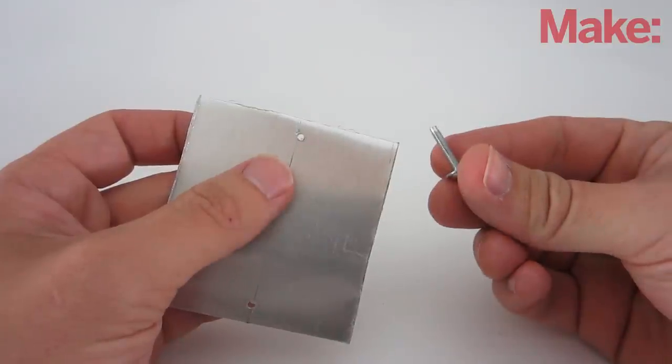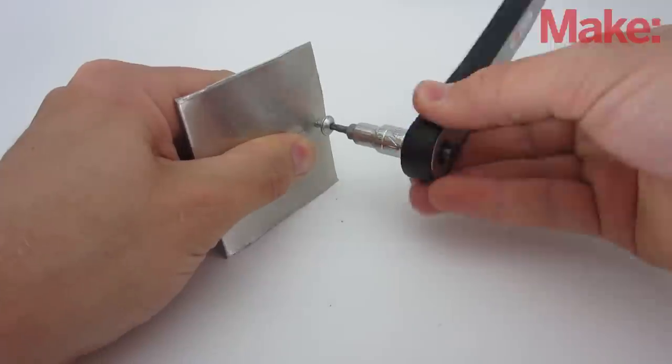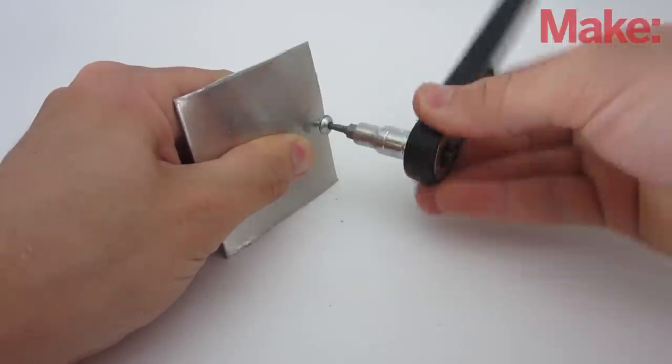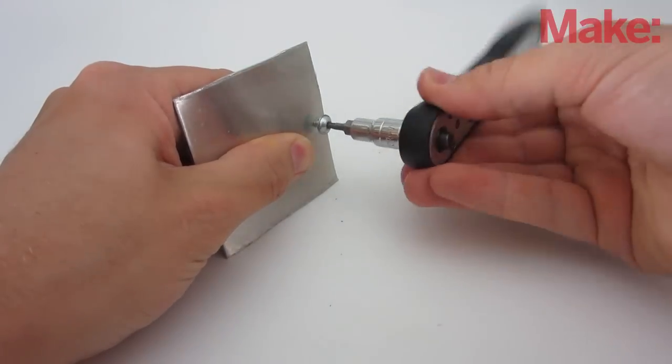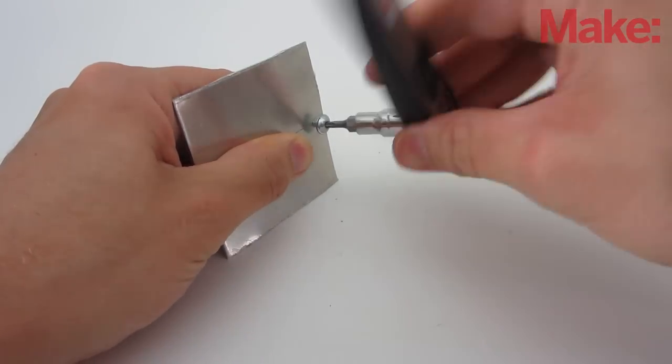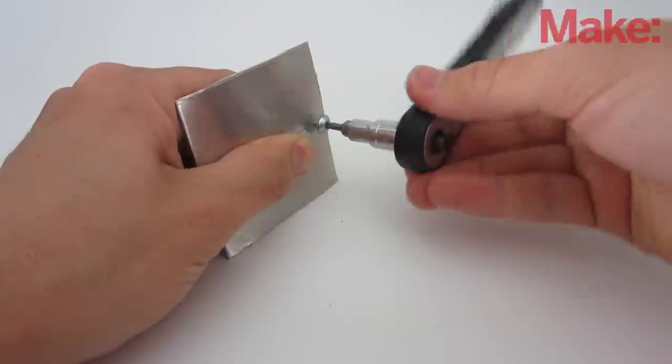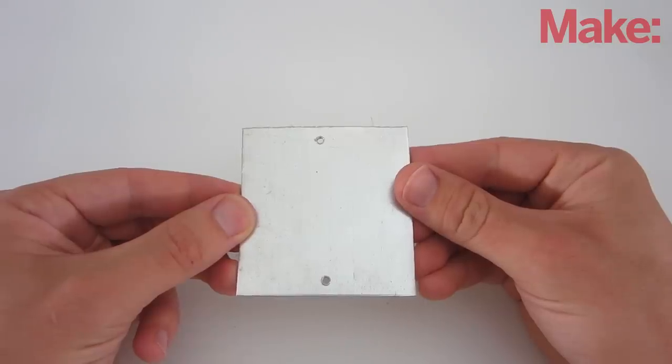Now we need to add screw threads to the holes. Normally, you want to use a tap for this. But if you don't have a tap the right size, you can take a couple of extra screws and tightly screw them into the holes. This will ruin the screws, but it should carve a decent set of threads into the plate.